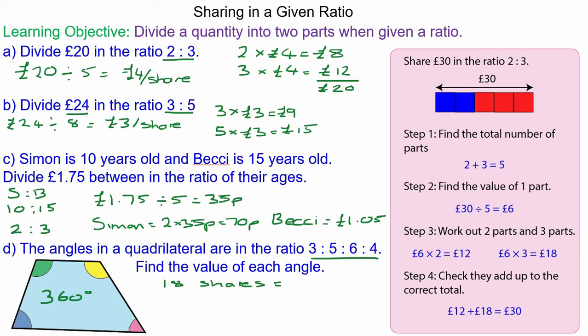So value of one share will be 360 divided by 18 which is 20 degrees per share. And splitting the ratio of 3 to 5 to 6 to 4, we have three lots of 20 degrees which is 60 degrees, 100 which is five times 20, 120 which is six times 20, and 80 degrees which is four times 20. And we know it's correct because they all add up to 360 degrees.